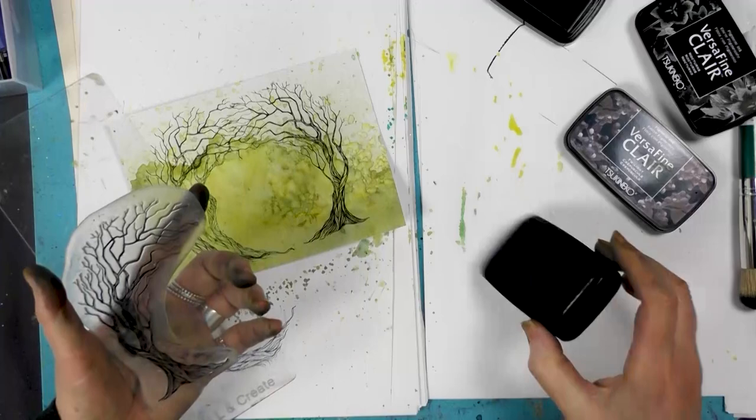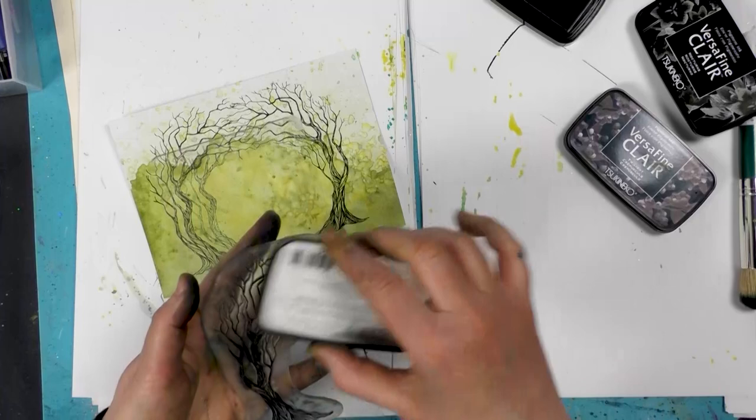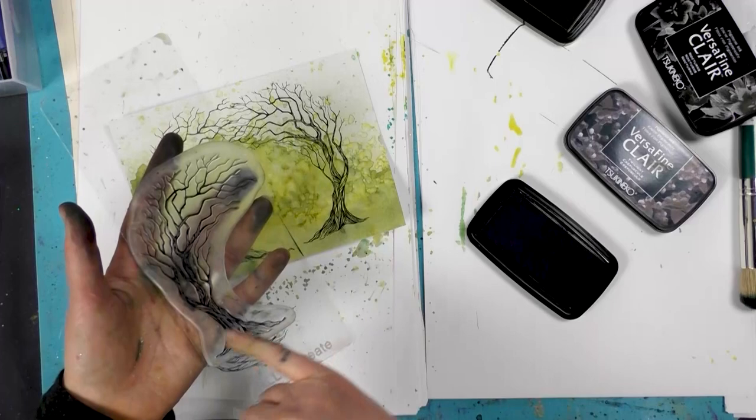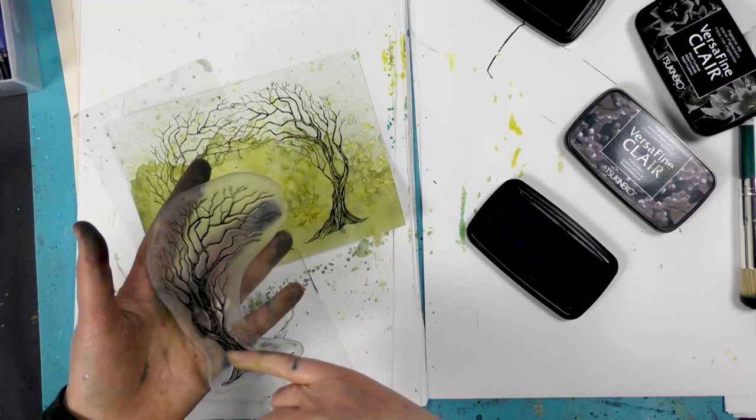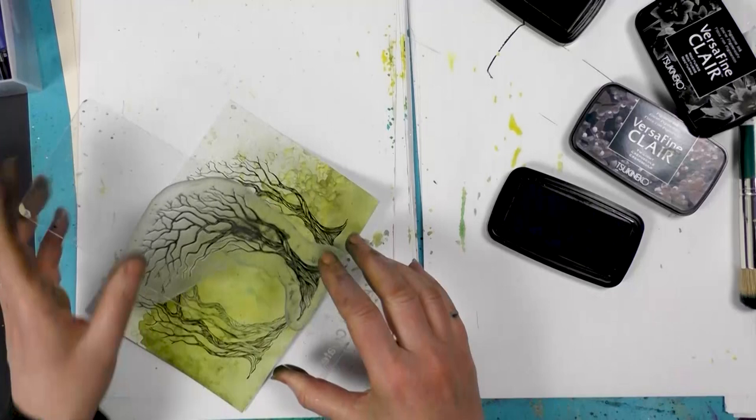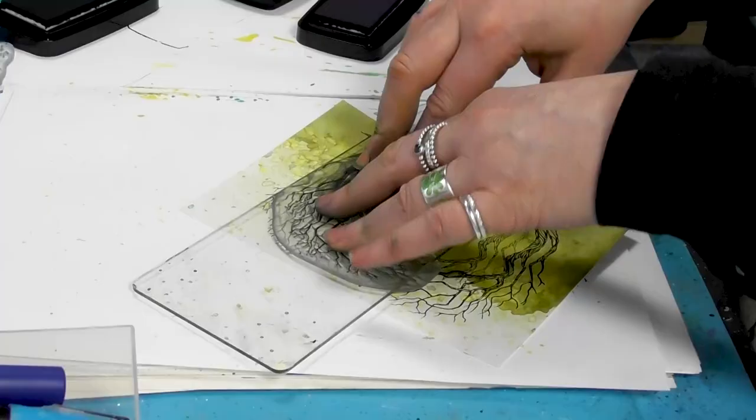And again I'm going to ink up now in the twilight. Now I've not inked up at all the base of the tree, okay? So forget that, just ink up the trunk and a few of the branches here. And again I'm just going to pop that down inside or in front.